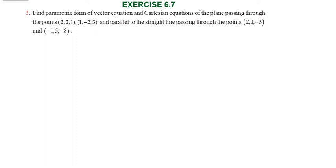Hi students, greetings from Success Education Academics. In 6.7, question number 3: find the parametric form of vector equation and Cartesian equation of the plane passing through the points and parallel to the strike line. It is one plane passing through the points and parallel to the strike line.